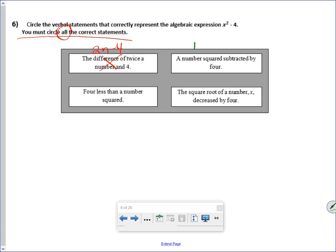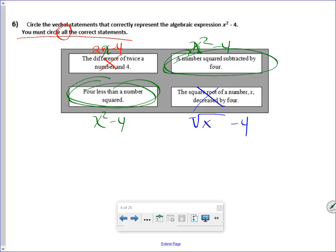A number squared subtracted by 4, or x squared, I guess is what we should use, x. So that's one. Four less than a number squared. So we squared a number and we took away 4. So that's one. This one is the square root of a number decreased by 4. So that's not one either.